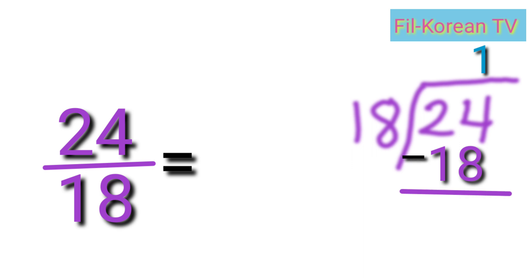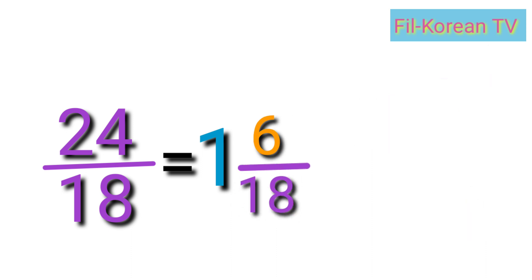Twenty-four minus eighteen equals six. Now, let's write the answer. The quotient one is the whole number. The remainder six is the numerator, and the denominator is still eighteen. The answer is one and six-eighteenths.